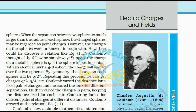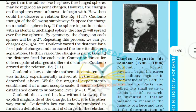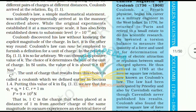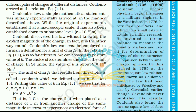Coulomb thought of a clever way to vary charges: suppose the charge on a metallic sphere is q. If the sphere is put in contact with an identical uncharged sphere, by symmetry the charge on each sphere will be q/2. Repeating this process, we can get charges of q/2, q/4, etc. Coulomb varied the distance for a fixed pair of charges and measured the force for different separations, then varied the charges in pairs keeping the distance fixed. Comparing the forces for different pairs of charges and different distances, Coulomb arrived at his relation.